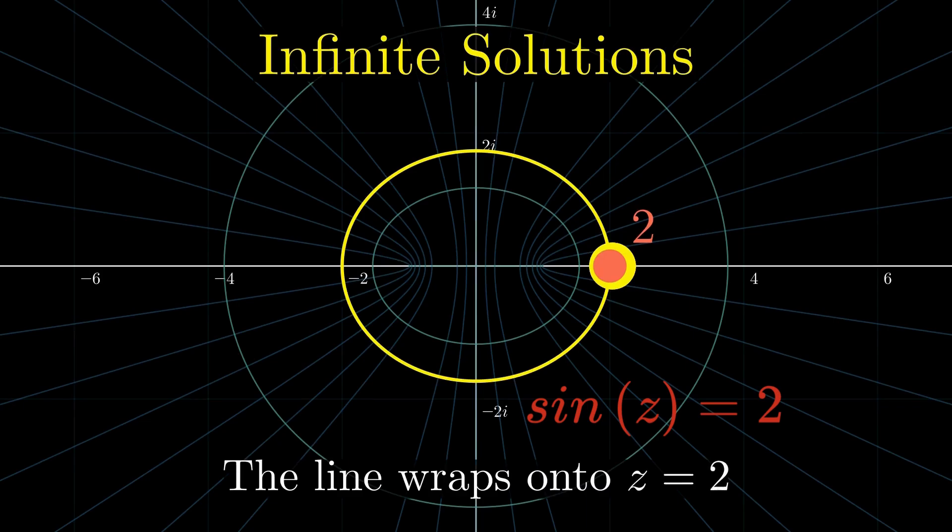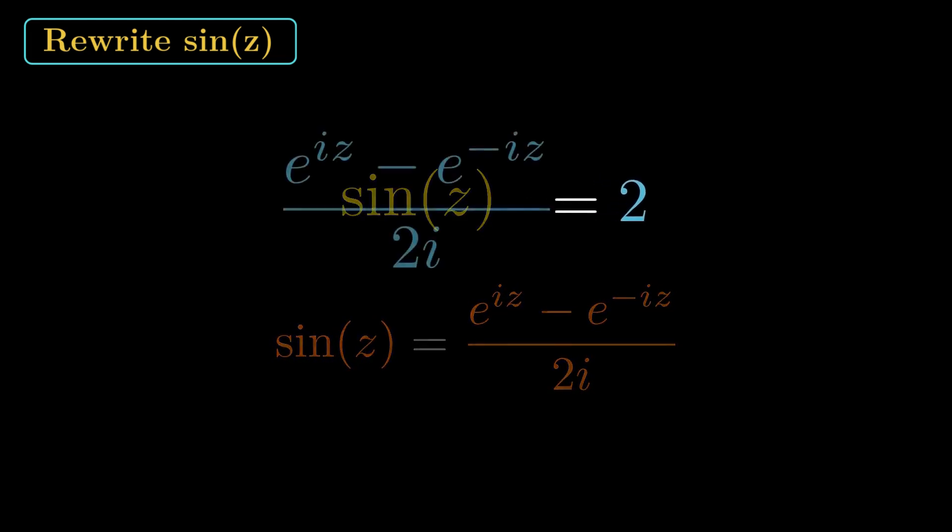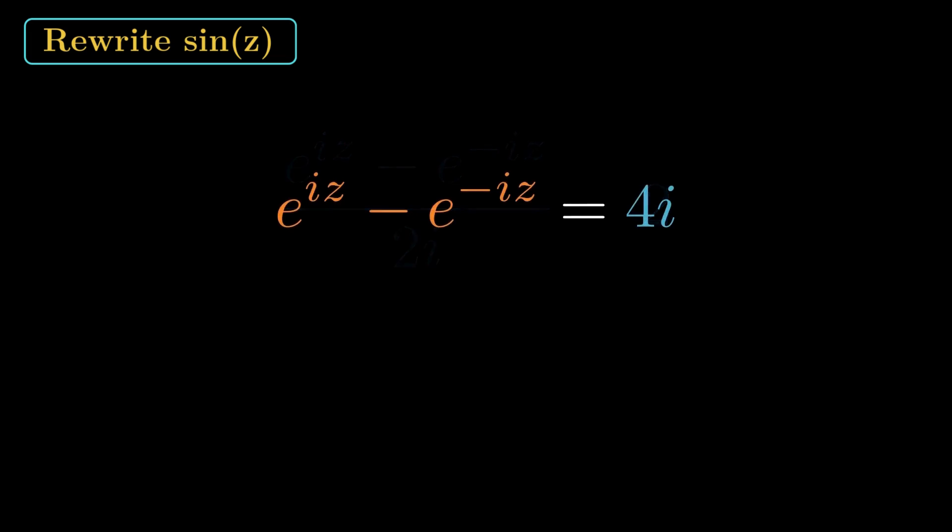Let's explore the solution. Step 1. Rewrite sine of a complex number. We start with sine of z equals 2. Use the exponential form. Sine of z equals e to the iz minus e to the minus iz over 2i. Substitute it in, then clear the denominator. e to the iz minus e to the minus iz equals 4i.